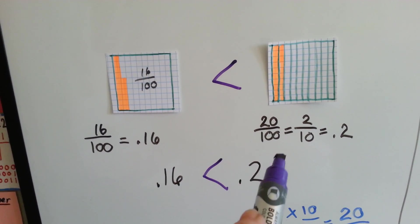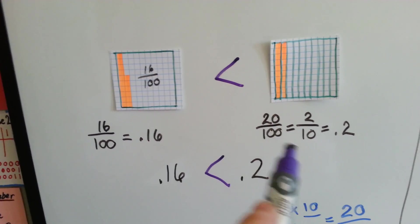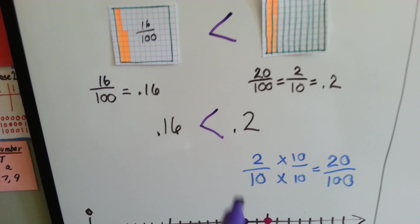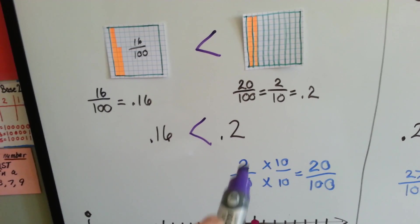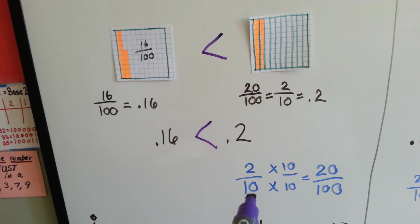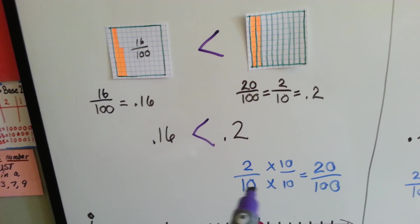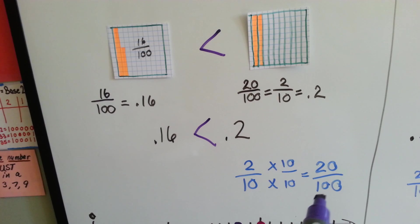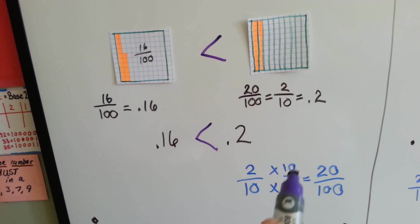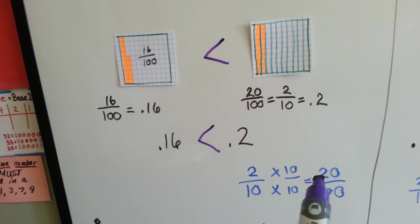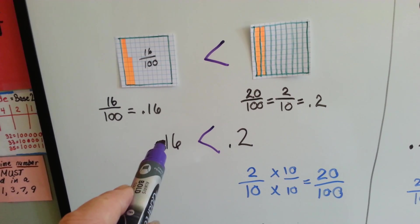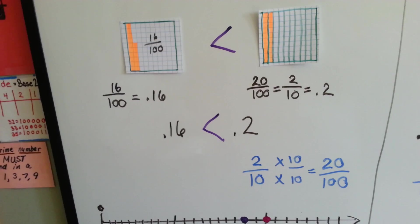Make sure you're comparing denominators that are the same. If we multiply the two-tenths — numerator and denominator — by ten, we make the denominator into one-hundredths, and we can see the numerator is twenty. Twenty is bigger than sixteen.